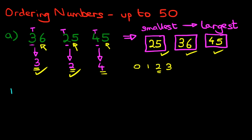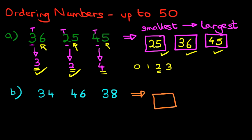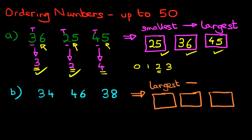Now let's look at our second example. This time let's suppose we've got the numbers 34, 46, and 38. We are going to rearrange the numbers from the largest to the smallest. Using the same method, we're going to look at the digit on the left — the tens digit — for each number: tens, tens, tens.